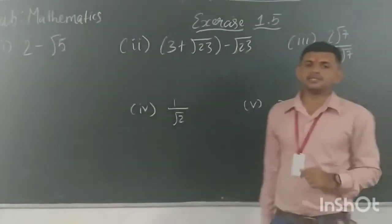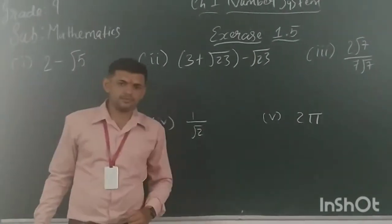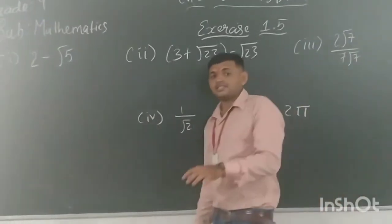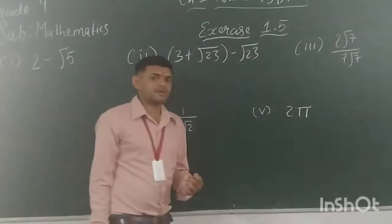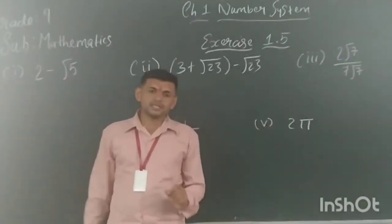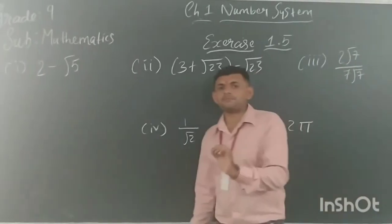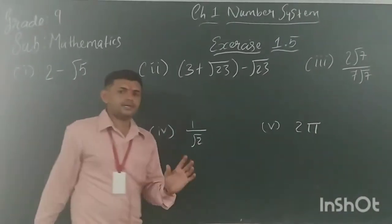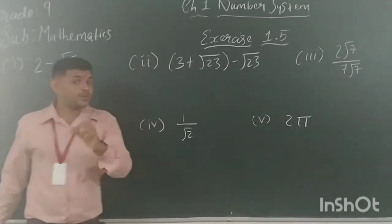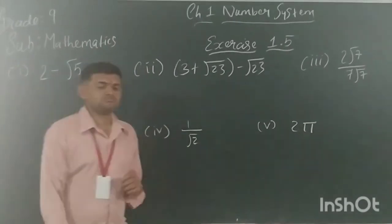The first question of the exercise says: state if the given numbers are rational or irrational numbers. To remind you, an irrational number is one which is the square root of a prime number — the square root of a prime number is always an irrational number. If there is no square root of a prime number, it will be a rational number.